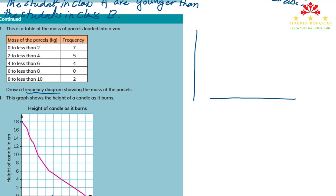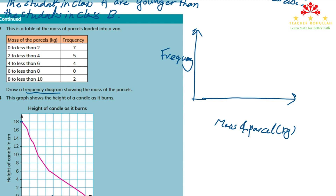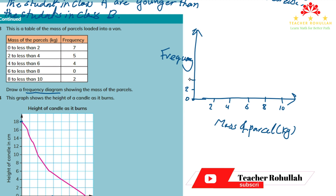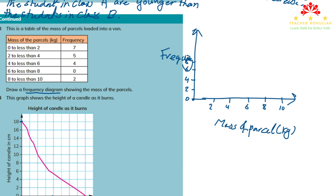On the y-axis I put frequency and on the x-axis I put mass of parcel in kg. The biggest frequency value is 7, so I use a scale up to 10, with intervals: 0, 2, 4, 6, 8, 10 on the x-axis for the mass ranges.